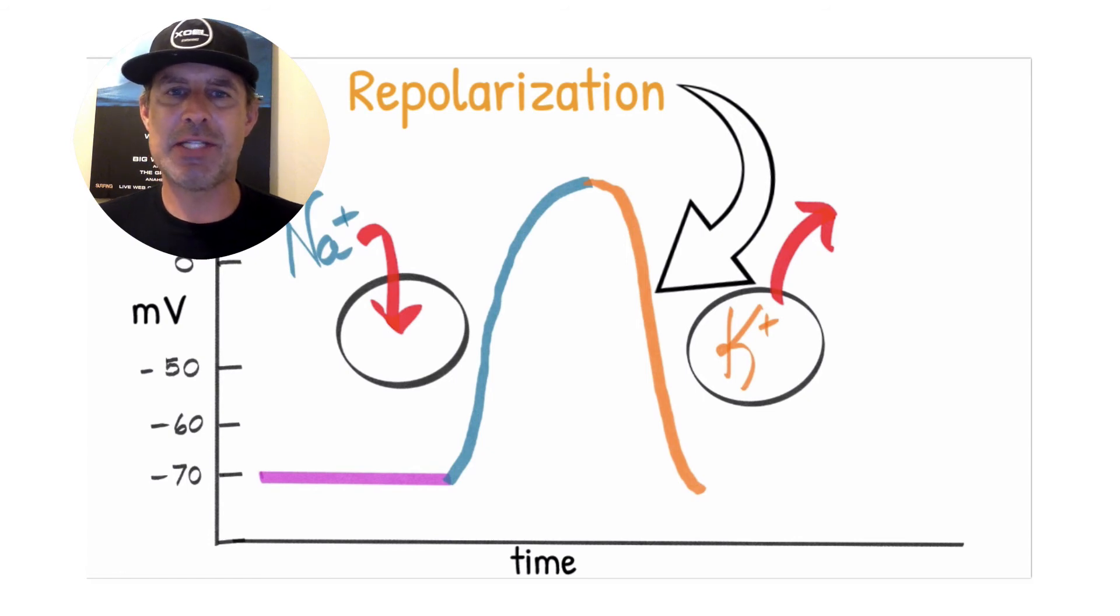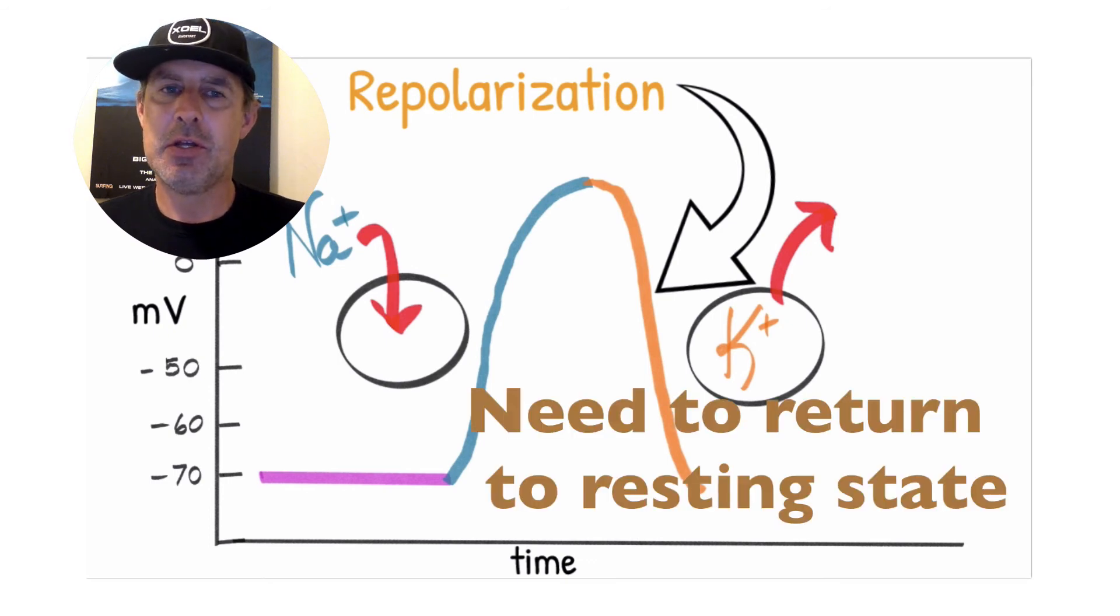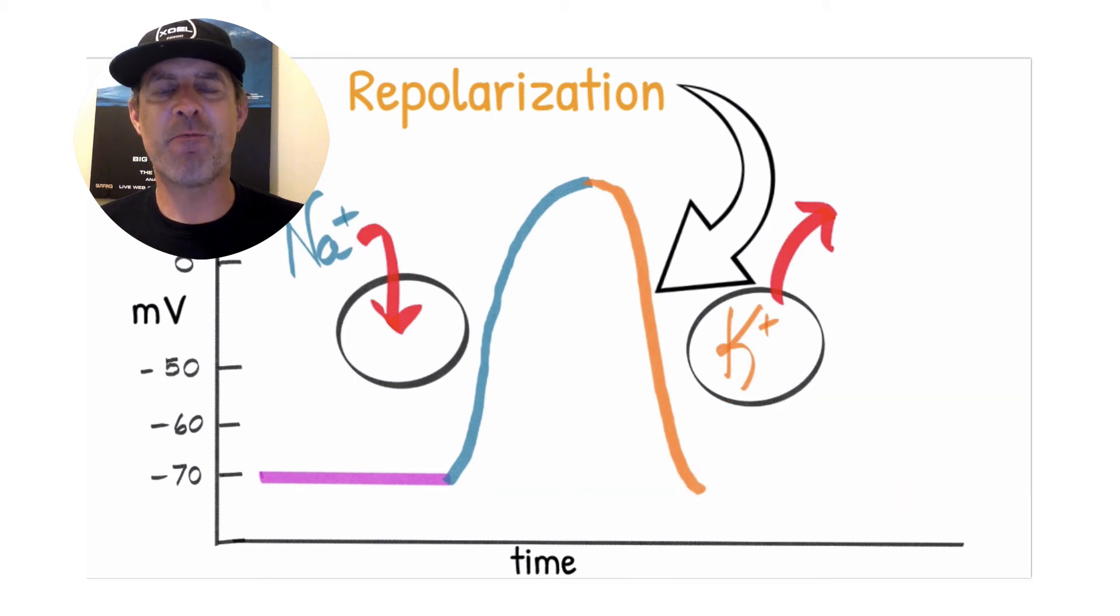So cells always want to be, or I shouldn't say always, cells like to return to the resting state so they can depolarize again. So cells that have depolarized must first repolarize before they depolarize again. And that's what we see here.